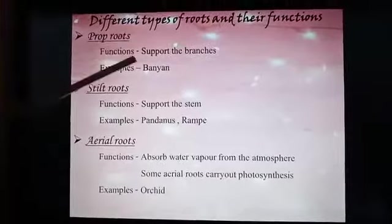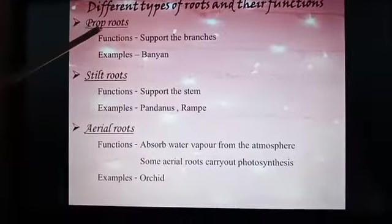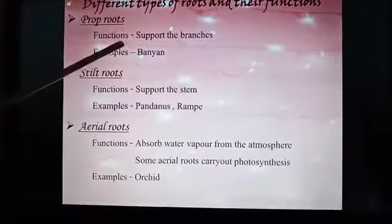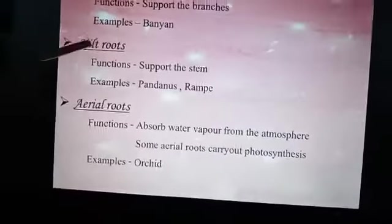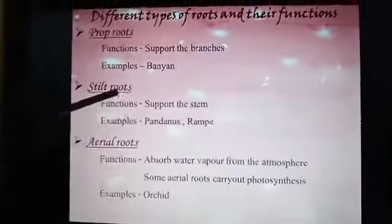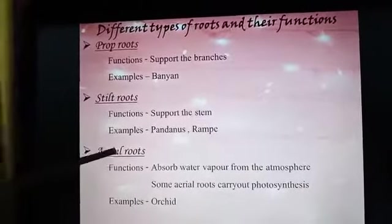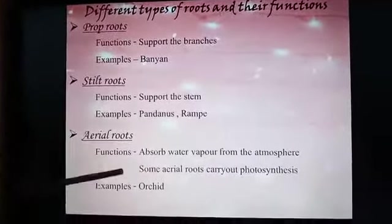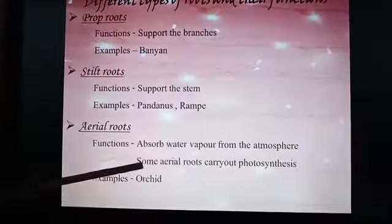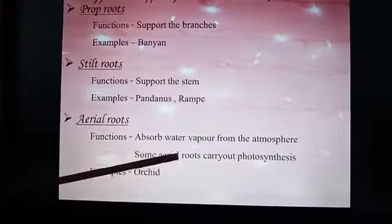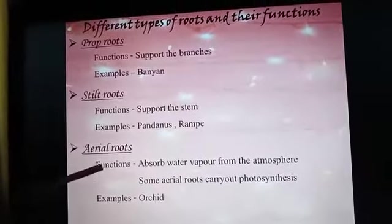Different types of roots and their functions. Prop root function: support the branches. Example: banyan. Stilt roots function: support the stem. Example: pandanus. Aerial roots function: absorb water vapor from the atmosphere; some aerial roots also carry out photosynthesis. Example: orchid.